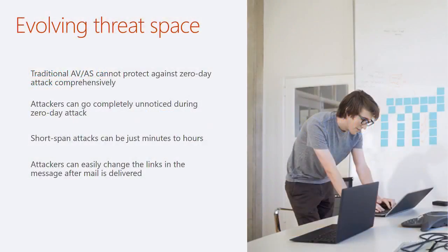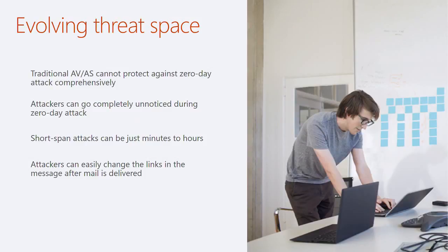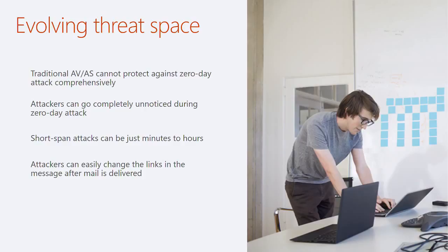Advanced threat protection. The problem we see with traditional antivirus solutions is that because they rely on a signature, they can't really deal with zero-day attacks - something you're seeing for the first time where no signatures are available. You have that period of time where you can be compromised before antivirus vendors release updates. Similarly, once vendors do release an update, attackers can change the campaign - sending a URL that looks good for a period of time, then pointing it to a malicious target, then changing back to avoid detection. These campaigns can run for just a couple of hours. It's very dynamic and a challenging space for traditional security.